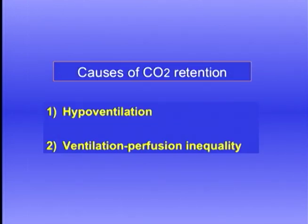There are two causes of CO2 retention. One is hypoventilation, which we're familiar with. But the second cause is ventilation-perfusion inequality, which is sometimes overlooked. V/Q inequality interferes with the transfer of all gases by the lung, including carbon dioxide. So a patient with V/Q inequality will have an increased arterial PCO2. The reason we often see patients with a normal PCO2 despite V/Q inequality is that the patient has increased ventilation to his alveoli.